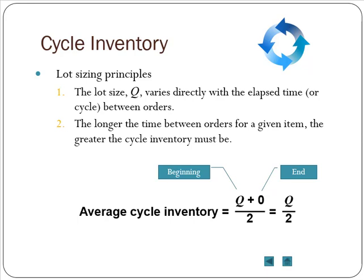It depends directly on the size of the lot, Q, how much you order every time. The assumption is we're going to place our order very efficiently, so when we receive our next order, we should just use up our last unit of inventory. At the beginning of this cycle, we have Q units—that's how much we ordered. Then we use it up throughout this cycle.